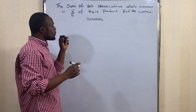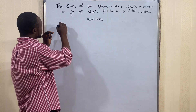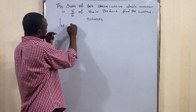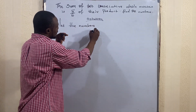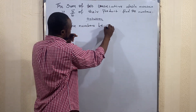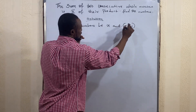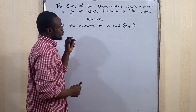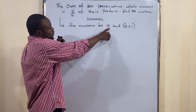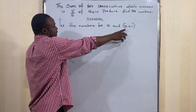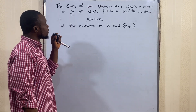The first thing we're going to do is define the two consecutive whole numbers. Let the numbers be x and (x + 1). I'm seeing (x + 1) as a single entity, so I'm putting it in a bracket. The first consecutive number is x, and the second consecutive number is (x + 1).